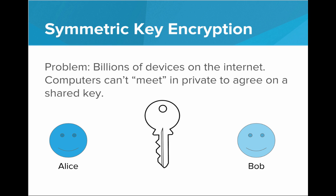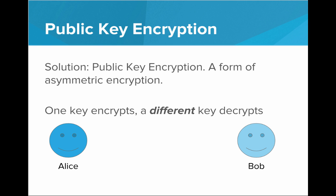This presents a problem for encrypted communication on the internet. There are billions of devices on the internet, and computers can't really meet in private to agree on a shared key. It's not reasonable to think that every computer will have billions of private keys that it's sharing with billions of other computers. So we need a different system. This is where asymmetric encryption comes in.